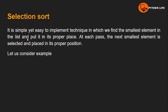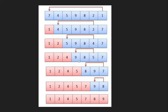In selection sort, we have a list of elements that can be arranged in ascending, descending, or mixed order. We start with an unsorted list. For example, we have the array 7, 4, 5, 9, 8, 2, 1. We find the minimum element and swap it.